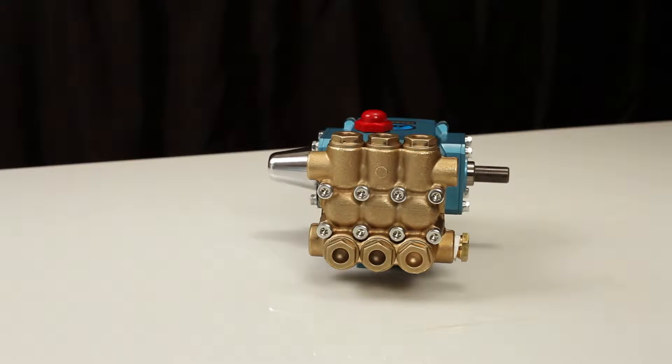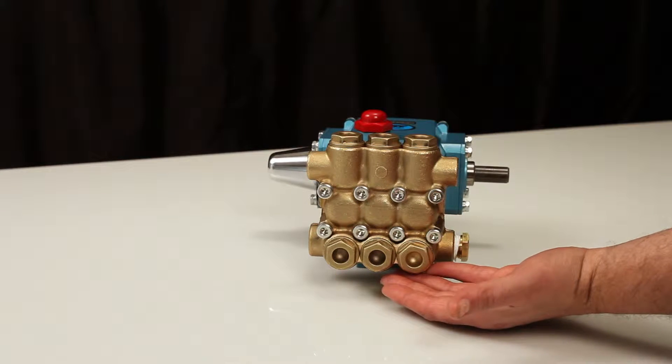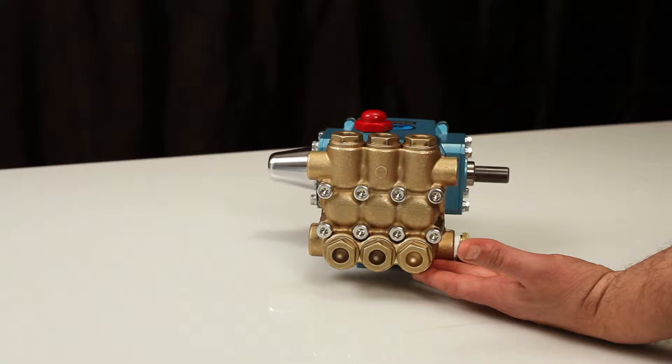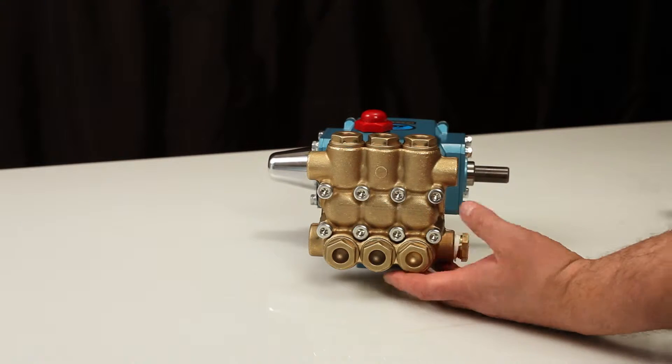The 3CP plunger pump contains two sets of valves. The valves located on the front of the manifold are the inlet valves. The valves located on the top are the discharge valves. Both the inlet and discharge valve assemblies are identical. Two valve assemblies are required to service the pump.